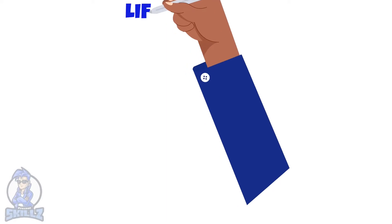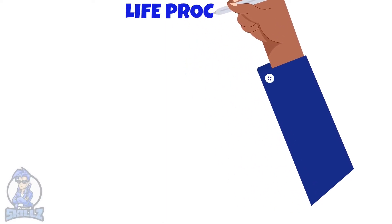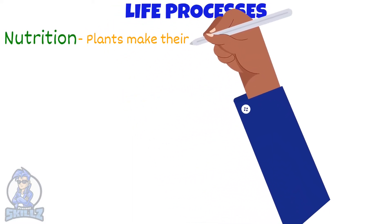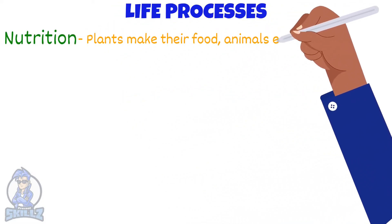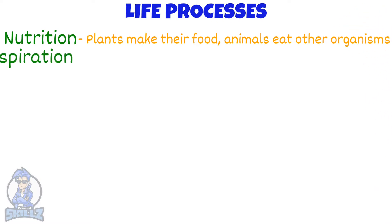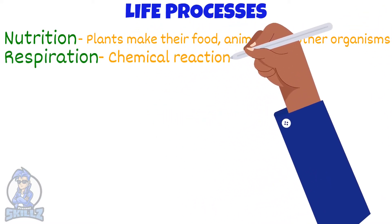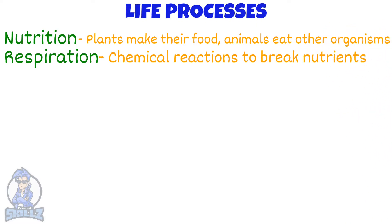This is — Gwen says that there are only 7 life processes, but actually there are 8. Let's take a look at them. Plants make their own food, while animals eat other organisms, creating chemical reactions to break down nutrients.